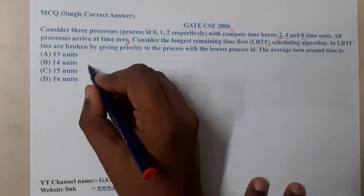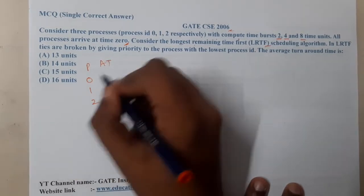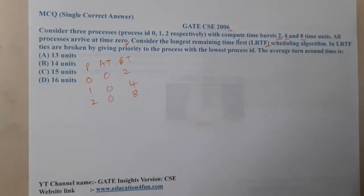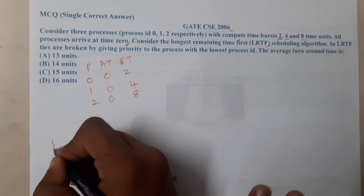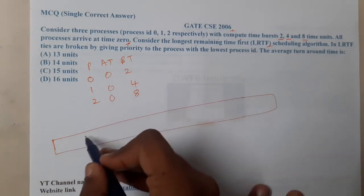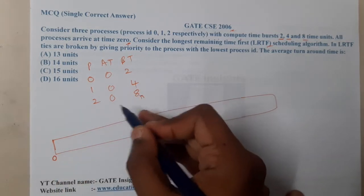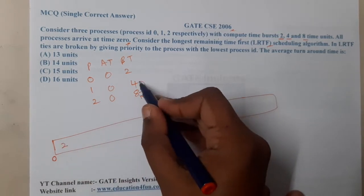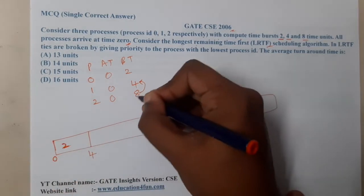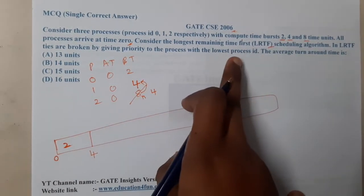Let us start solving. Process IDs are 0, 1, and 2. Arrival times are all 0. Burst times are 2, 4, and 8. At time 0, the maximum burst is 8, so process 2 gets the CPU. It runs from 0 to 4. Now process 2 has remaining time 4, and process 1 also has burst 4 — a tie. Since the lowest process ID wins, process 1 gets the chance.